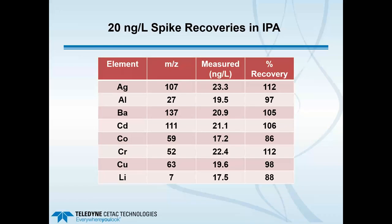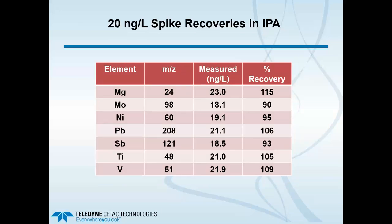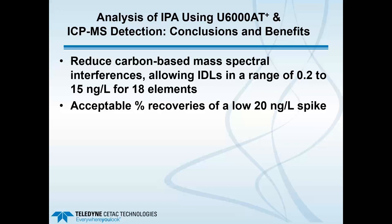For spike recoveries at the lowest calibration standard of 20 parts per trillion (20 nanograms per gram), all recoveries are good, running in a range of approximately 90 to 120 percent. All of this was done using reagent-grade isopropyl alcohol and non-cleanroom conditions. Using the membrane desolvation capability, we reduce carbon-based mass spectral interferences, allowing IDLs in the range of 0.2 to 15 nanograms per liter (0.2 to 15 parts per trillion) for 18 elements.